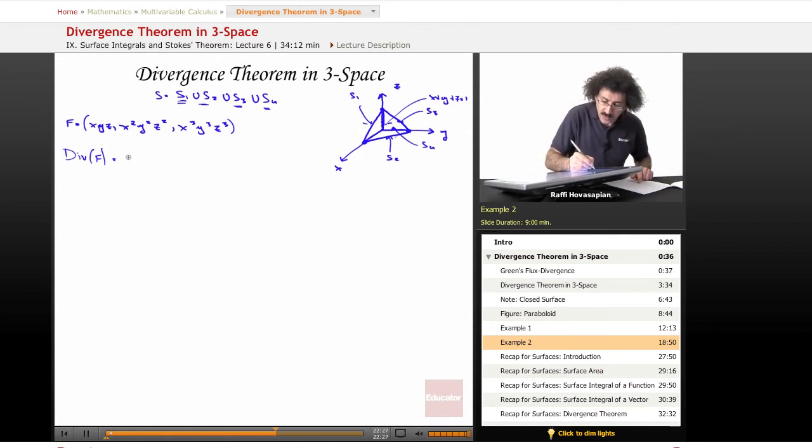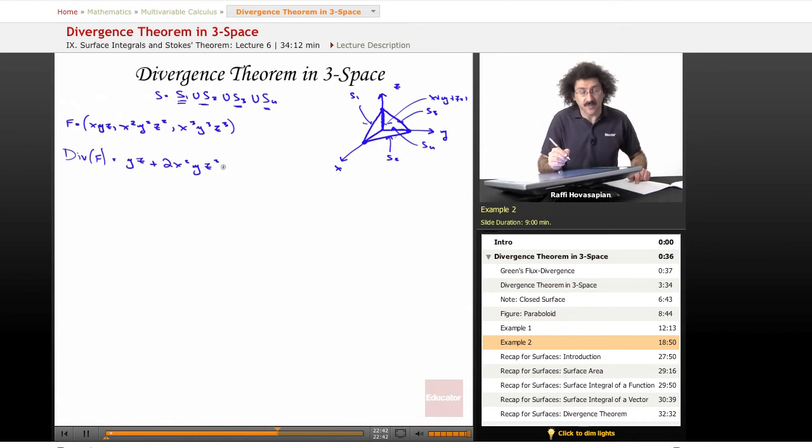The divergence of F is equal to, well this is f1, this is f2, this is f3. So df1 dx is going to be yz, df2 dy is going to be 2 x squared y z squared, and as always I hope that you are confirming this because I do have a tendency to make lots of arithmetic and differentiation mistakes. And the derivative with respect to z is going to be 3 x cubed y cubed z squared.